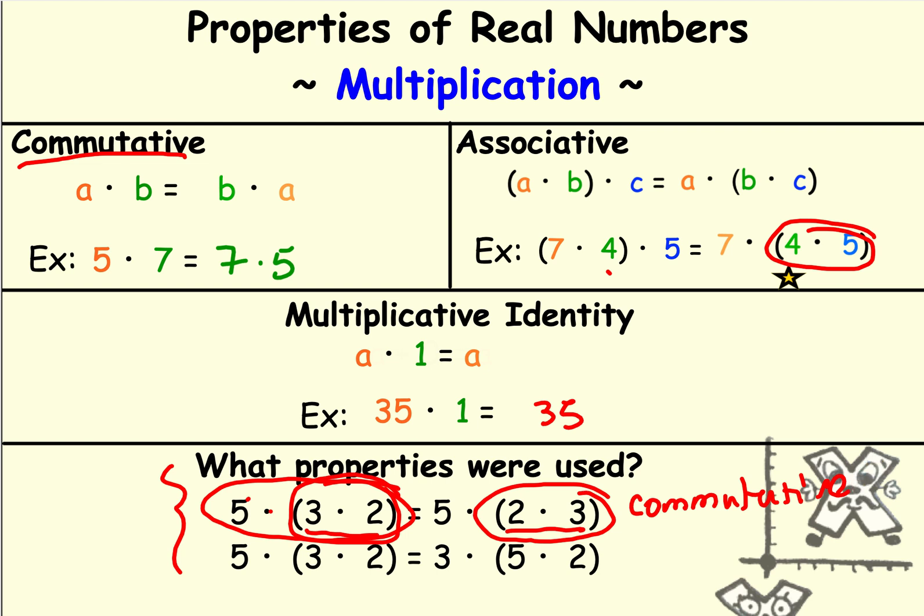So let's look at the second one. Same statement. I have 3, 5, 2. So did the order change? Yes. So definitely the commutative property. What about the group? Well, the group was 3 and 2, but now it's 5 and 2. So did the group change? Yes. So it's also the associative property. So when we're looking at which properties were used to rewrite a numerical expression or later on an algebraic expression, you can use more than one property at a time. So here's two examples: one where only the commutative property was used, and one where the commutative and associative property were used.